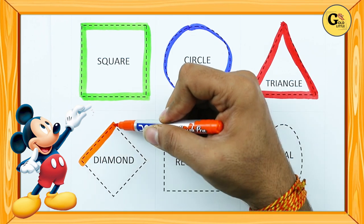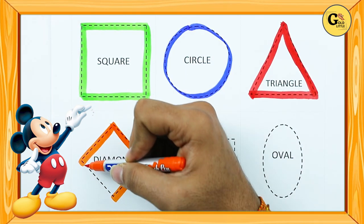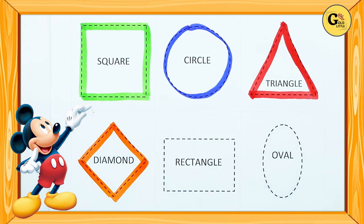One sliding line, two sliding line, three sliding line, four sliding line. It's a diamond, orange color.